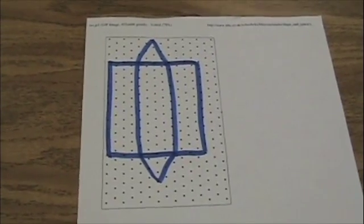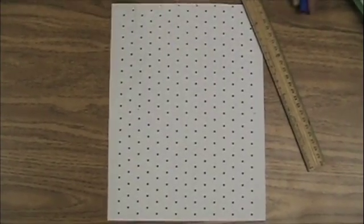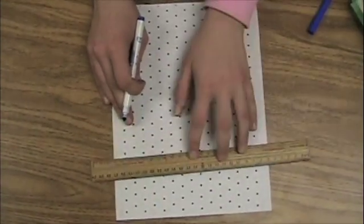The first net we will draw is a triangular prism net. The first step is to make a rectangle in the middle of the page. The rectangle has to be 3 dots across by 12 dots down.